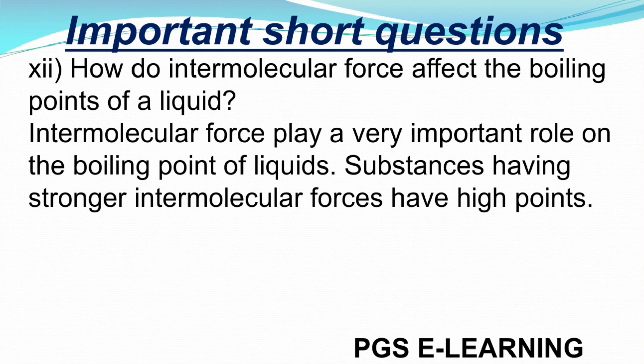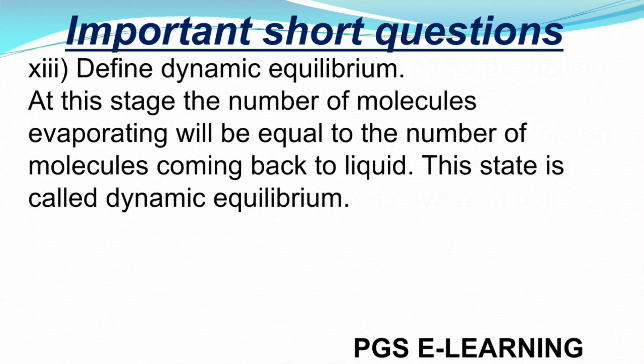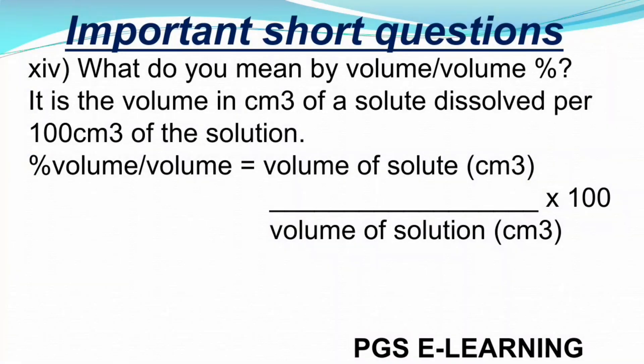Question 12: How do intermolecular forces affect the boiling point of a liquid? Intermolecular forces play a very important role in the boiling point of a liquid. Substances having stronger intermolecular forces have higher boiling points. Question 13: Define dynamic equilibrium. At this stage, the number of molecules evaporating will be equal to the number of molecules coming back to the liquid; this is called dynamic equilibrium. Question 14: What do you mean by volume-by-volume percentage? This is the volume in cm³ of the solute dissolved per 100 cm³ of the solution. The equation is as given.